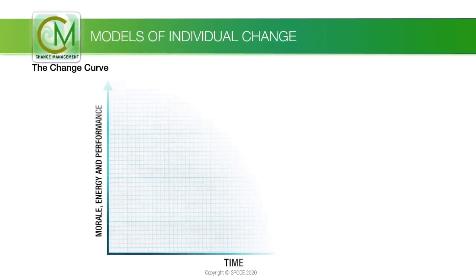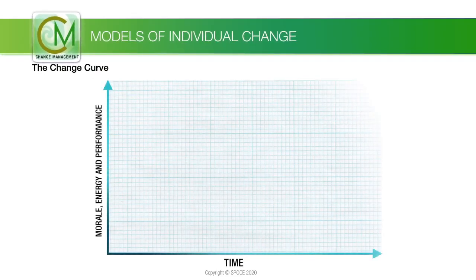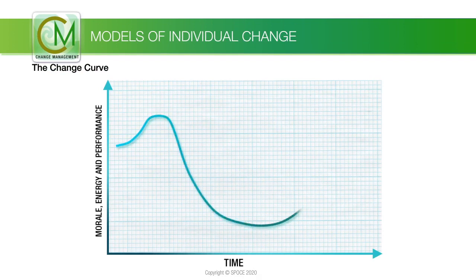We now start to look at models of individual change. One very helpful way of understanding the process of change for individuals or groups is the change curve — an oldie but goodie. It is also sometimes referred to as the transition curve, the coping cycle, or the human response to change.